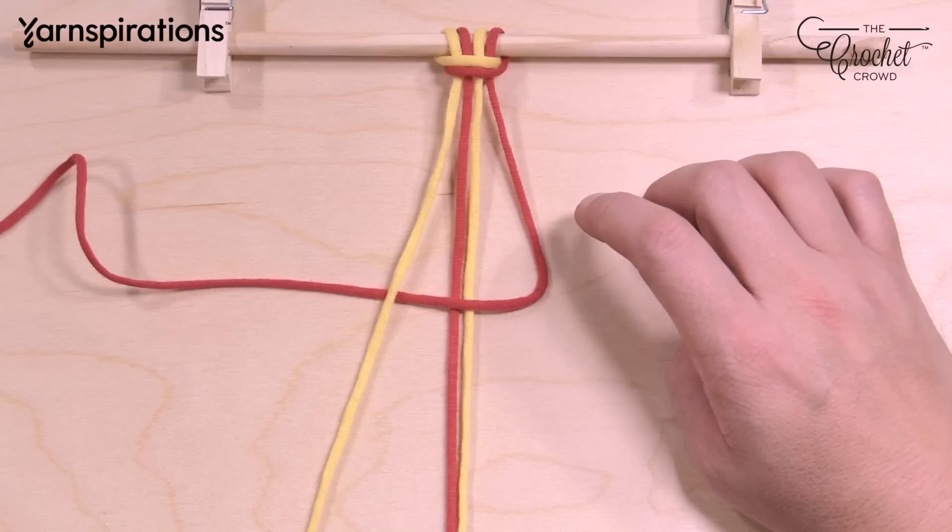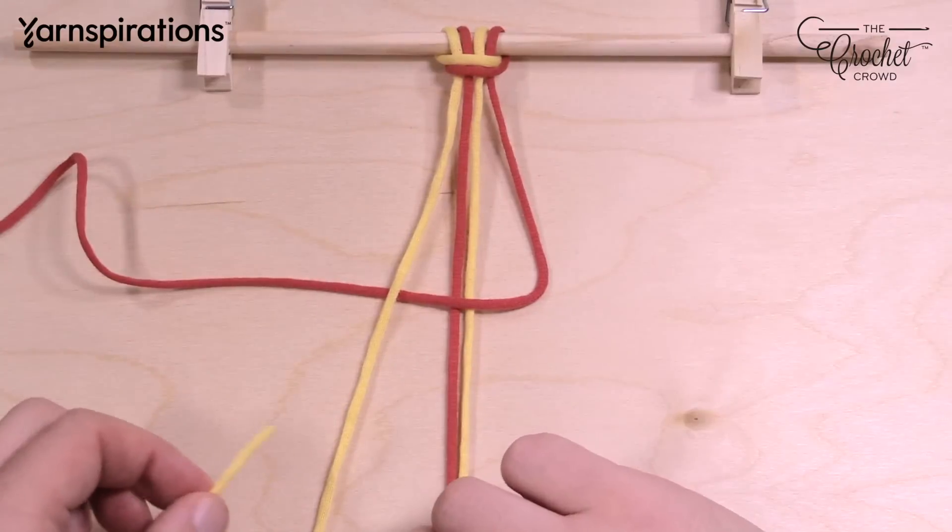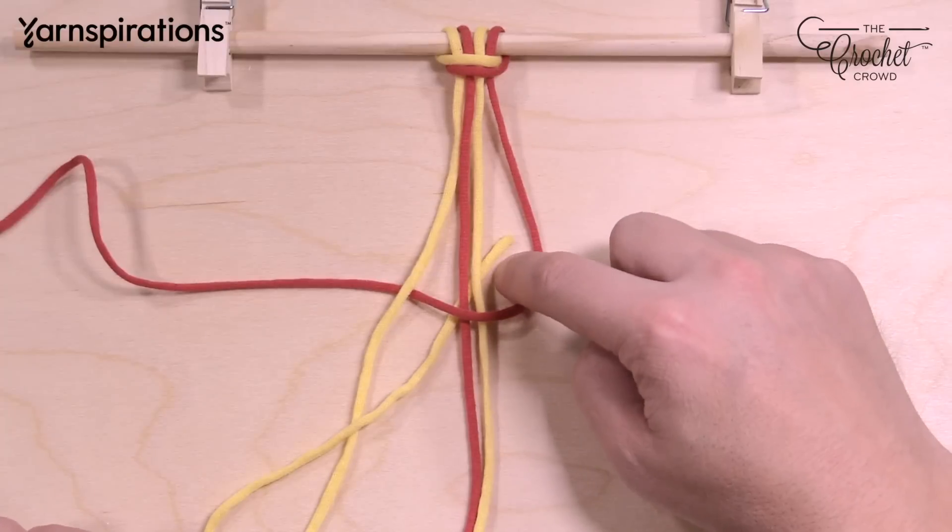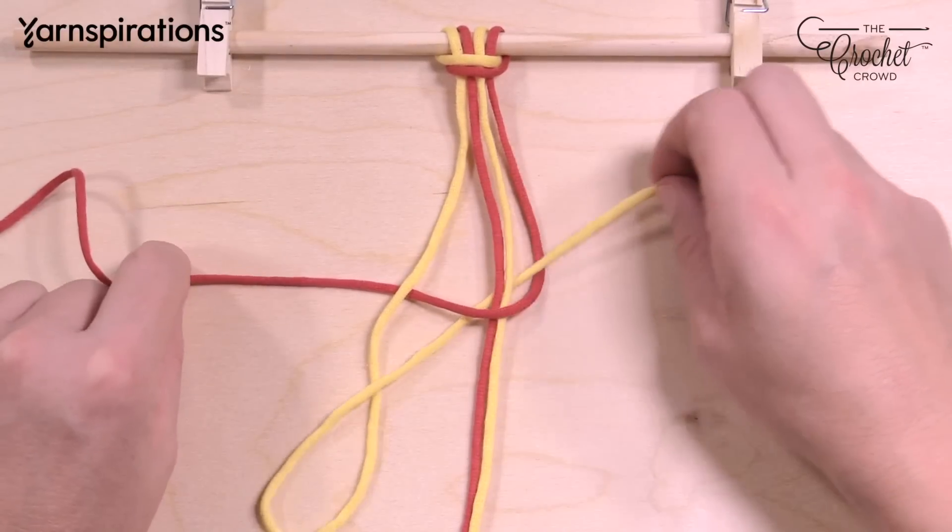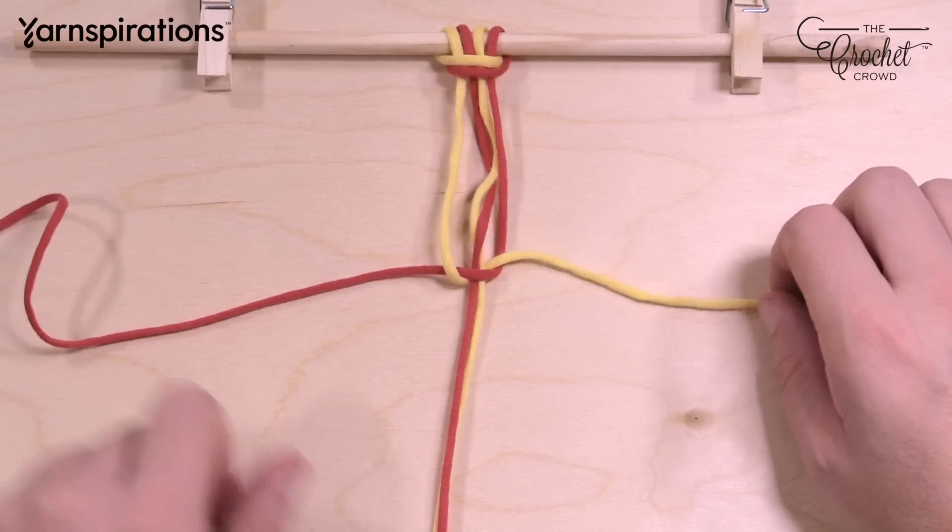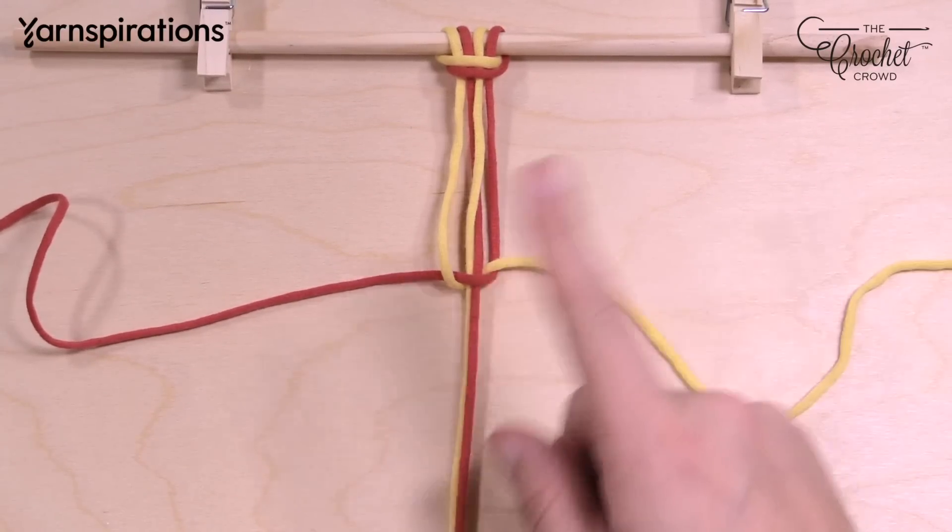Now take this yellow strand and go up on the underside of the center line. Just pick it up and put it through this space right here. Then pull nice and snug, and when you tie this, it creates a spiral.